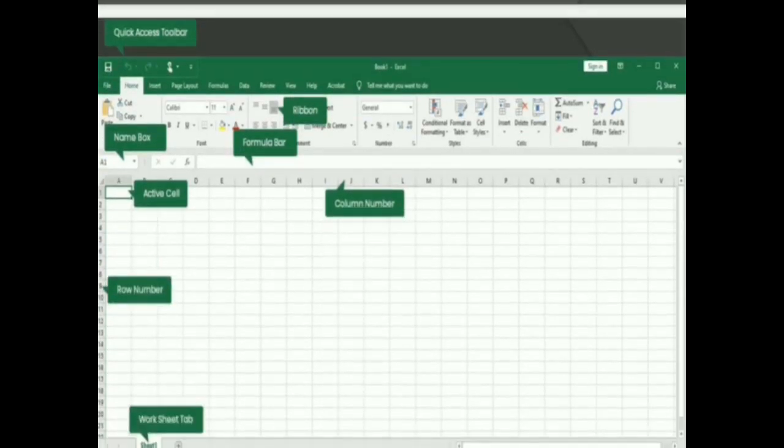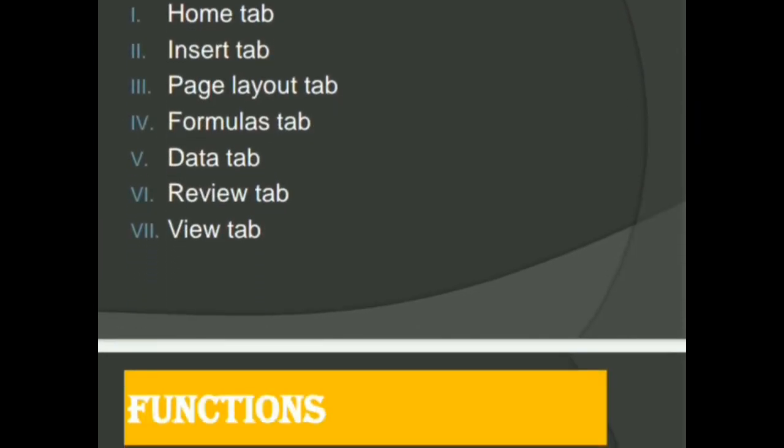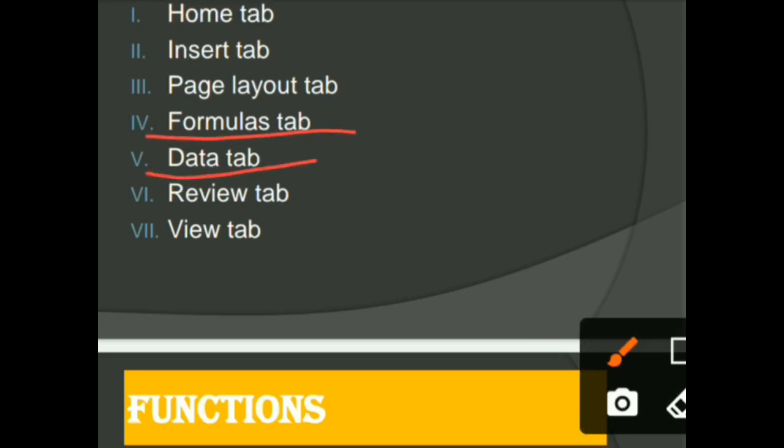Next is the tabs. There are seven tabs in MS Excel: Home tab, Insert tab, Page Layout tab, Formulas tab, Data tab, Review tab, View tab. New in MS Excel, difference between tabs of MS Excel and MS Word: here new are Formula tab and Data tab. Home tab, Insert tab, Page Layout tab, Review tab and View tab we already discussed in MS Word.